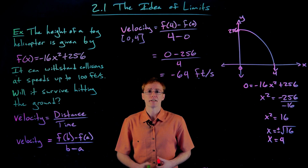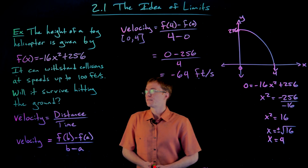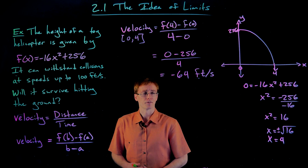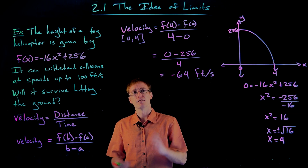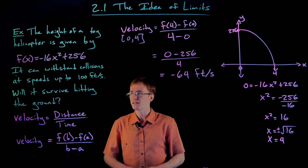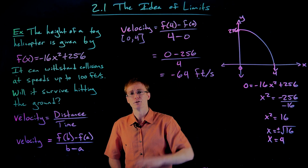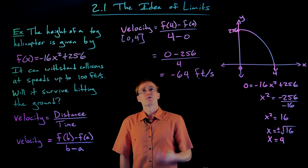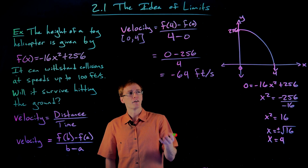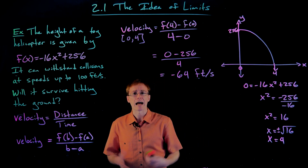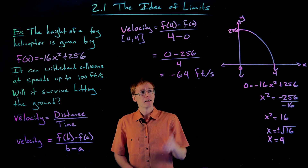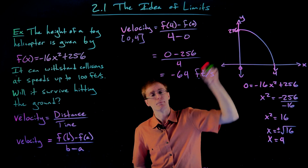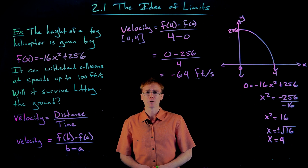Let's make sure we understand what this quantity represents. We're trying to figure out the speed the helicopter hits the ground at — it needs to be less than 100 feet per second to survive. Our calculation shows negative 64 feet per second. The negative indicates direction — it's moving downward. But this is not the velocity at the moment it hits the ground; it's the average velocity over the four-second interval.